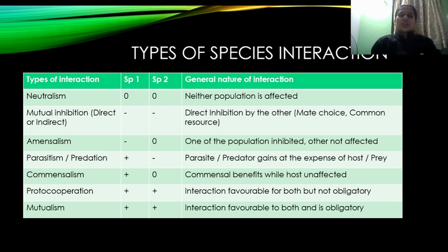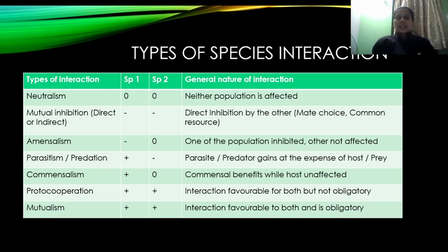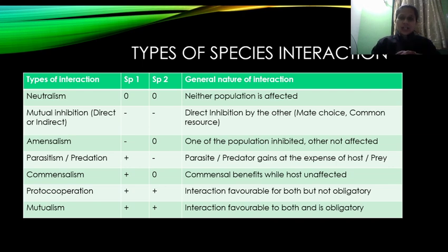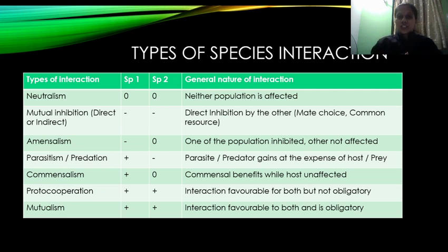Coming to the most important interactions in this ecosystem — हम बात कर रहे हैं species के interaction की। एक species दूसरे species के साथ किस तरीके का relation बनाती है? इस relation से क्या उनको कोई नुकसान होता है, उनको हानि पहुँचती है, या उनको फायदा होता है? We will also use a mixture of Hindi and English to understand this concept.